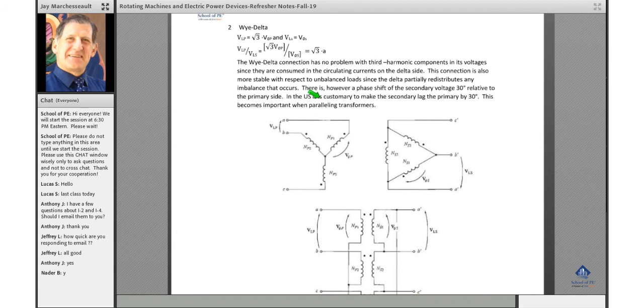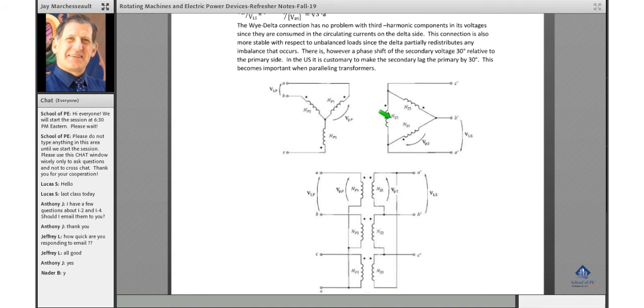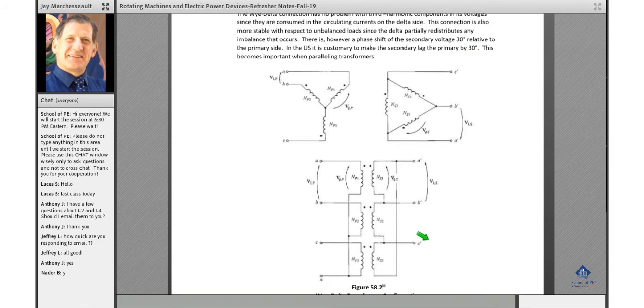In the US, it's customary to make the secondary lag the primary by 30 degrees, which you need to know when you parallel transformers. You have to make sure if you have this transformer and you're trying to put another transformer in parallel with it, you've got to have the secondary's 30-degree phase shift in the same direction, otherwise you'll have problems.